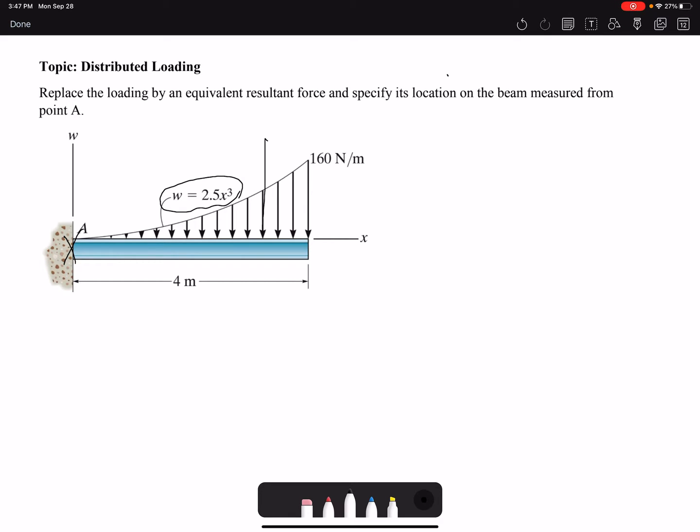So FR is simply the integral of W dx, or the area under the curve, and our x is changing from 0 to 4 meters.